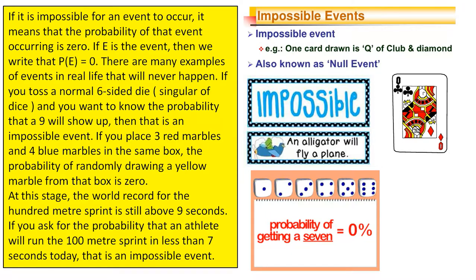There are many examples of events in real life that will never happen. If you toss a normal six-sided die — singular of dice — and you want to know the probability that a nine will show up, then that is an impossible event.